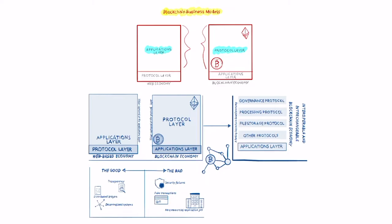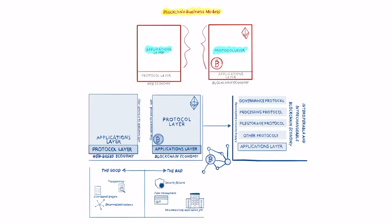When you look at the internet in general, you see that the web economy is made of two core parts: one part is the protocol layer, the other part is the applications layer. When you look instead at the blockchain-based economy, things are switched upside down — you have an applications layer beneath the protocol layer.